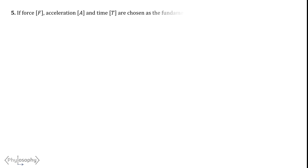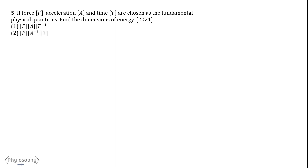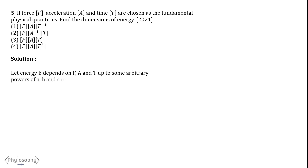Our next problem is: if force F, acceleration A, and time T are chosen as the fundamental physical quantities, find the dimensions of energy. To solve this, we apply the principle of homogeneity of dimensions — an equation is dimensionally correct if the dimensions of terms on both sides are the same. Let energy E depend on F, A, and T to arbitrary powers a, b, and c respectively, so E is proportional to F^a · A^b · T^c. The dimensional formulas are: energy E → ML²T⁻²; force F → MLT⁻²; acceleration A → LT⁻²; time T → T.